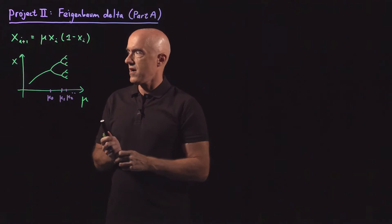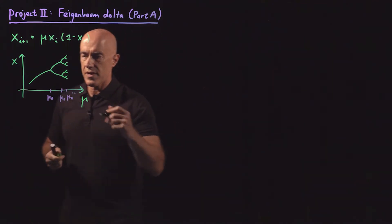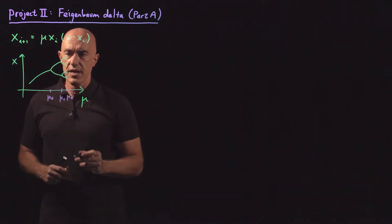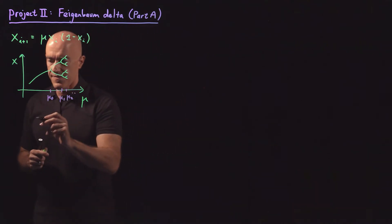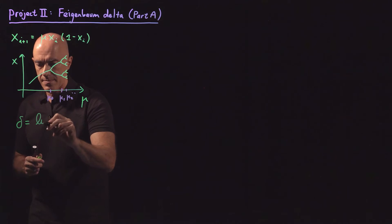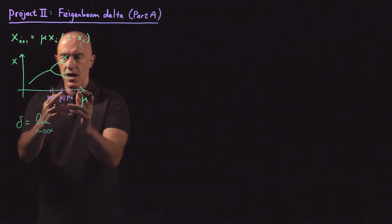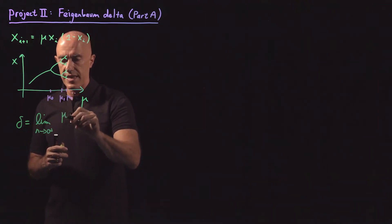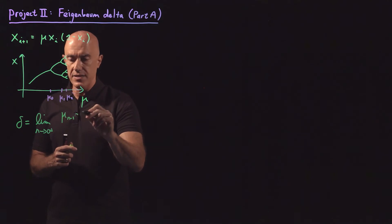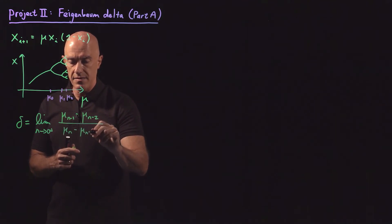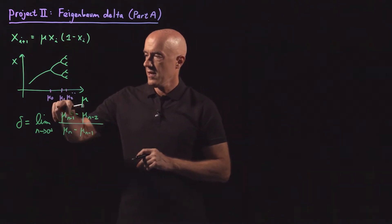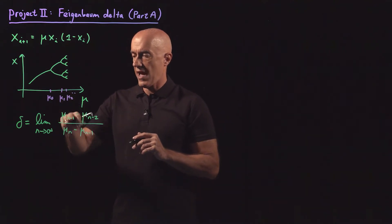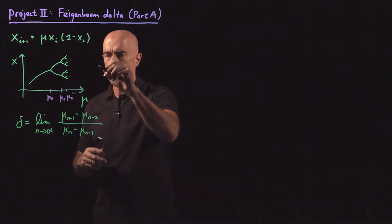So what is the definition of the Feigenbaum delta? If we look at these widths, they're getting smaller and smaller as we get to higher and higher periods. The Feigenbaum delta is equal to the limit as n goes to infinity of these widths. So it's the larger width divided by the smaller width that's right next to it. So we can write that as (mu n-1 minus mu n-2) divided by (mu n minus mu n-1).